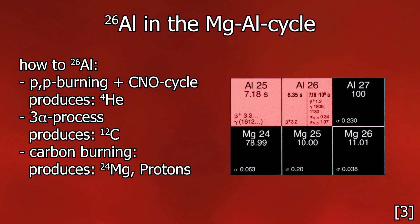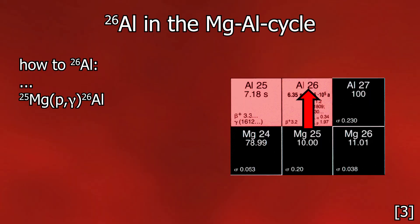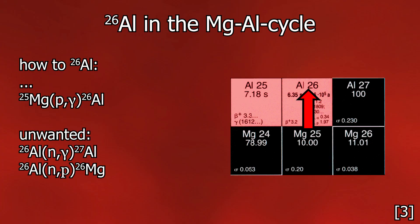The aluminium is produced via P-gamma reactions, i.e. proton capture, of magnesium-25. The magnesium is mainly in the carbon-to-neon shell. It should be noted that it must also be a very neutron-poor medium. If possible, free neutrons should not be present, otherwise they will turn aluminium-26 back into magnesium-26 via an N-P reaction.